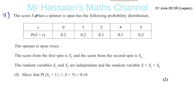The score S when a spinner is spun has the following probability distribution. The scores you can get are 0, 1, 2, 4, or 5. Those are the numbers that appear on the spinner, and these are the probabilities of those numbers appearing. It's not a fair spinner — some numbers are more likely to show than others. Here's the probability distribution for each of those scores.